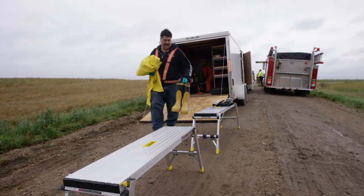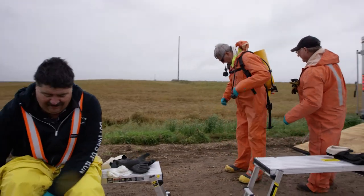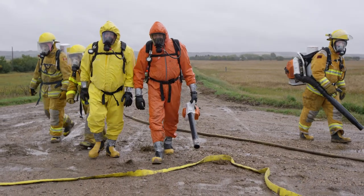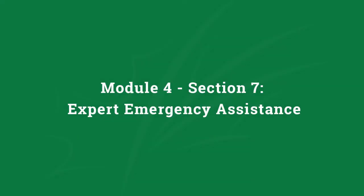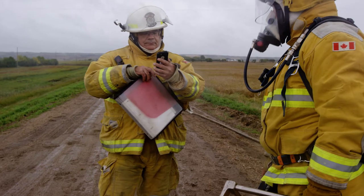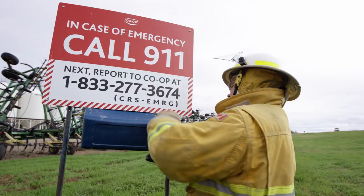The owner's emergency response plan may invoke a system from another agency, such as a manufacturer or an emergency response contractor. The emergency response plan is the primary route for obtaining expert help. After the scene is secured so people are not in immediate danger, the most important thing in an emergency is to identify the person or company identified in the ERAP and activate their emergency response plan as quickly as possible.